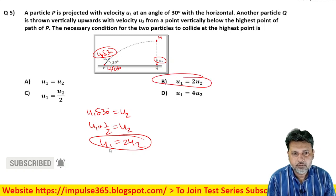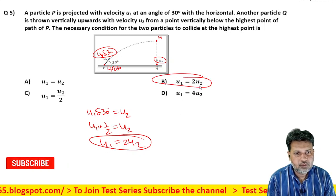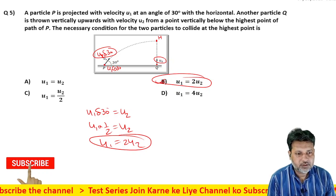Kaun sa option sa hiya hai? B wala option. U1 is equal to 2 U2, U1 is equal to 2 U2 hai. Theek hai na? So next question dekhte hain.